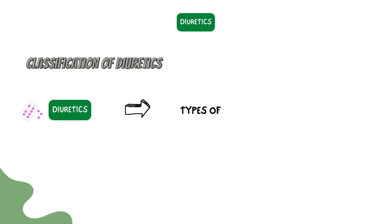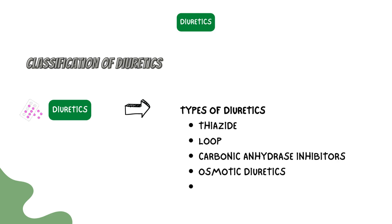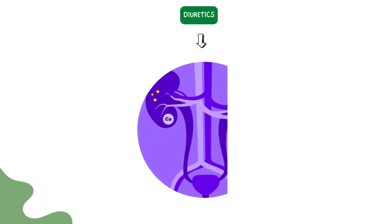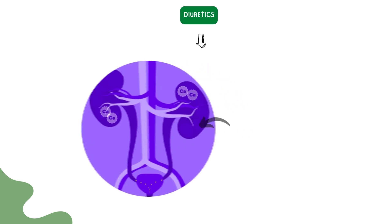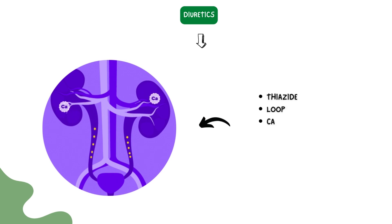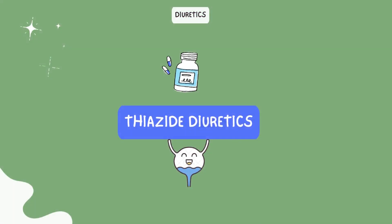Here are the types of diuretics used in clinical practice: thiazide diuretics, loop diuretics, carbonic anhydrase inhibitors, osmotic diuretics, and potassium-sparing diuretics. The overall goal of diuretic therapy is to increase the amount of water excreted in the urine. Different kinds of diuretics have different mechanisms of action. Now, let's understand the mechanism of action of these diuretics and their clinical significance in clinical practice.